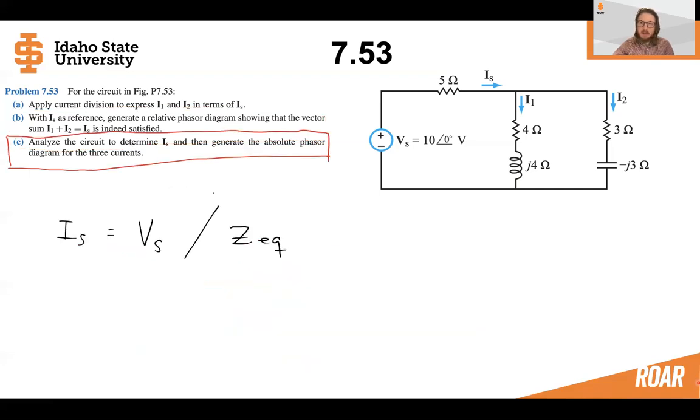But what if we were to solve this whole circuit and find IS? Well, then we could find the absolute angle of I1 and I2. So let's go ahead and do that.